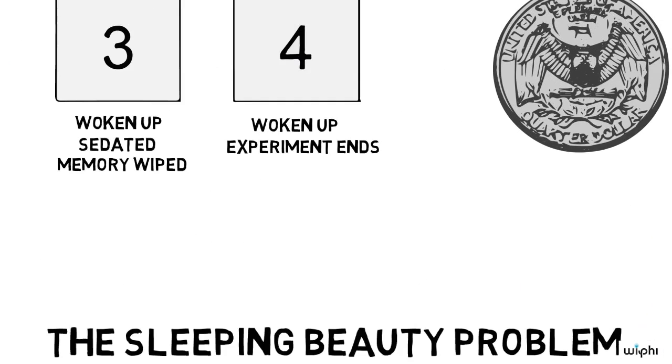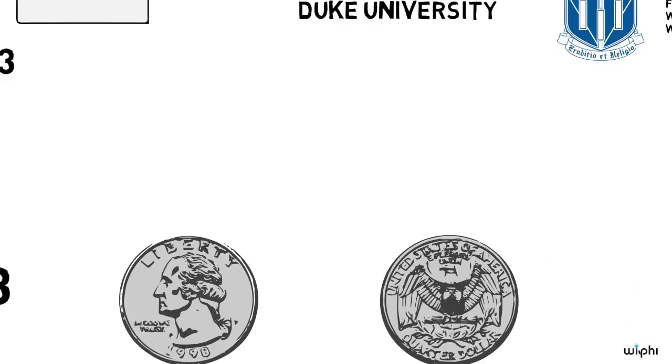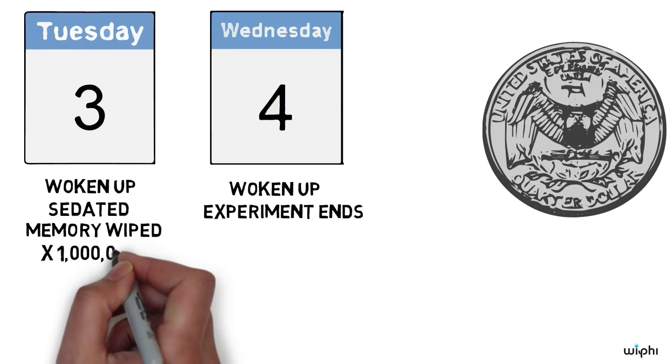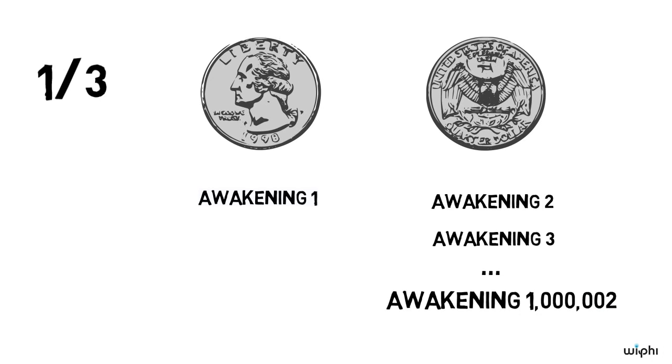Everything is as it was before, except that instead of being woken up once on Tuesday, we wake sleeping beauty up one million times on Tuesday. Now there are one million and two total potential awakenings. When she's woken up, from sleeping beauty's perspective she could be in any one of those million and two awakenings.